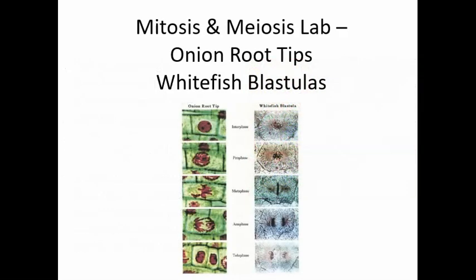This has been an overview of the mitosis and meiosis lab where you look at onion root tips and whitefish blastulas as places where a lot of cell growth is happening and hence a lot of mitosis is happening. Within that you can see examples of the different phases of mitosis using these stained or dyed cells. Thanks for watching, I hope this helps. Bye!